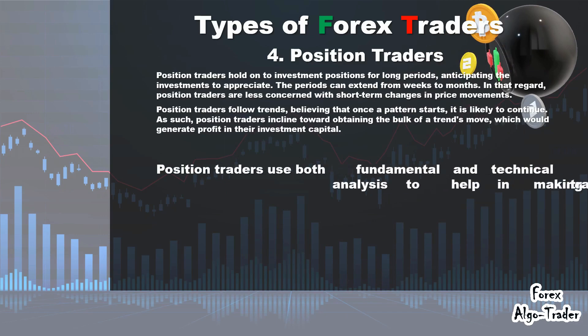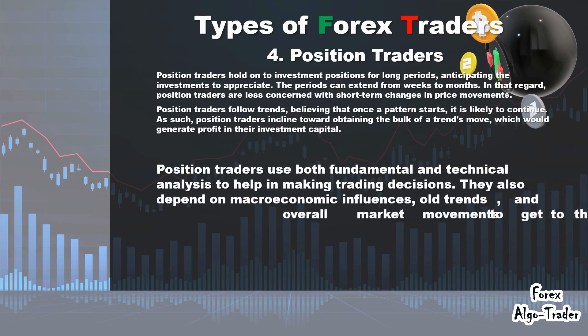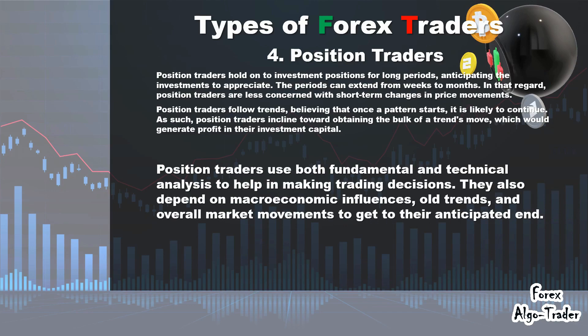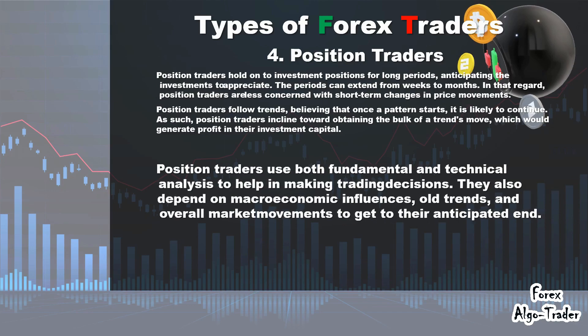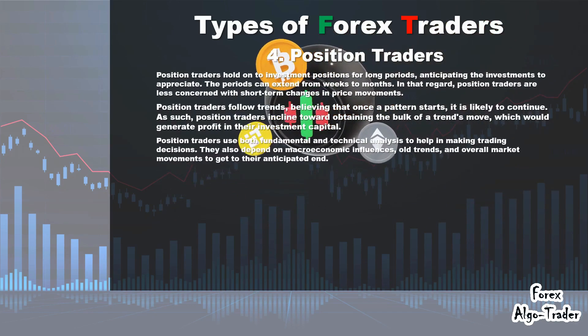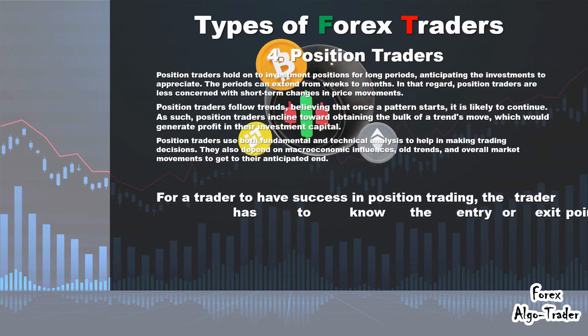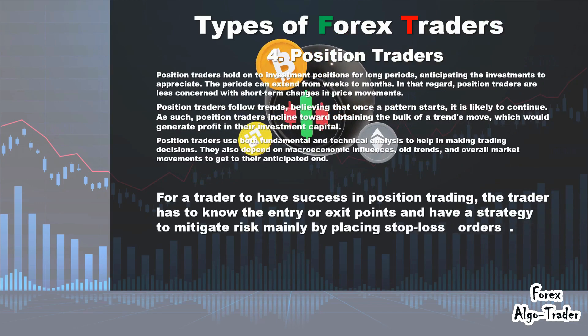Position traders use both fundamental and technical analysis to help in making trading decisions. They also depend on macroeconomic influences, old trends, and overall market movements to get to their anticipated end. For a trader to have success in position trading, the trader has to know the entry or exit points and have a strategy to mitigate risk, mainly by placing stop-loss orders.